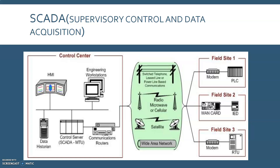SCADA systems are usually designed to be fault-tolerant systems with significant redundancy built into the system. However, redundancy may not be a sufficient countermeasure in the face of a malicious attack. The control center houses a control server and communication routers, along with other components including the HMI, engineering workstation, and data historians, which are all connected by a LAN.